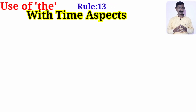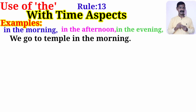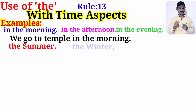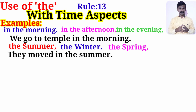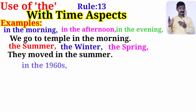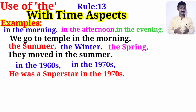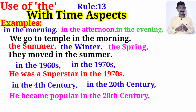We use article 'the' with time aspects — for example: in the morning, in the afternoon, in the evening. Also with seasons: the summer, the winter, the spring. In the case of decades: in the 1960s, in the 1970s. And when speaking about a century: in the 4th century, in the 20th century, and so on.